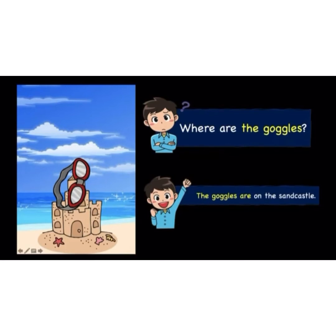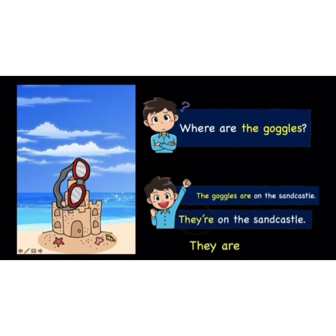Okay, where are Derek's goggles? Goggles are what you wear when you go diving. They are on top of the sand castle, right? So how are you going to say it properly? 'The goggles are on the sand castle.' The phrase 'the goggles are' is long — we shorten it to 'they're'. They're on the sand castle.